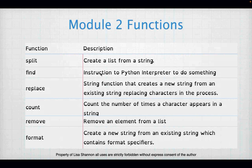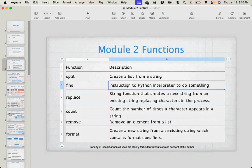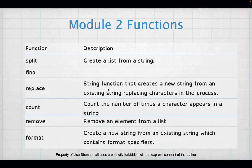We have some new functions — just a small amount of the functions available to you in Python to deal with lists and strings. I've focused on these because you're going to have to use them in your labs. Split creates a list from a string. Find returns the first index of something in a string. Count counts the number of times a character appears in a string. Remove removes an element from a list. And format creates a new string from an existing string which contains format specifiers.